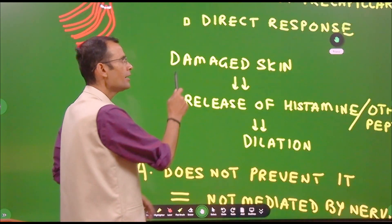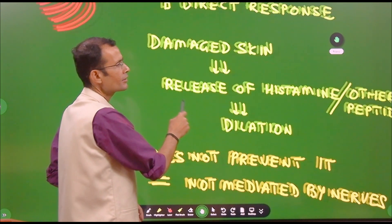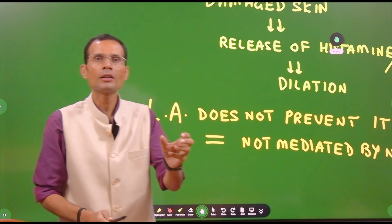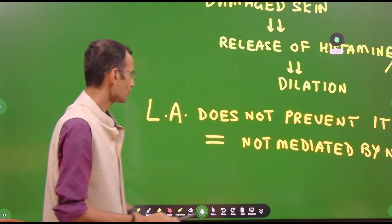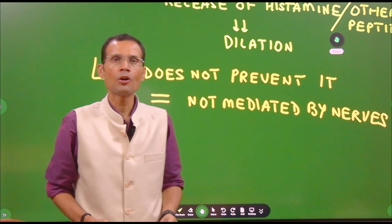What happens here is dilation in the precapillary sphincter region. That means more blood will be brought in to the capillaries and the capillaries also dilate and therefore more blood in that region resulting in the appearance of that red line or red reaction. It is a direct response, meaning that it is not mediated by any nerves.